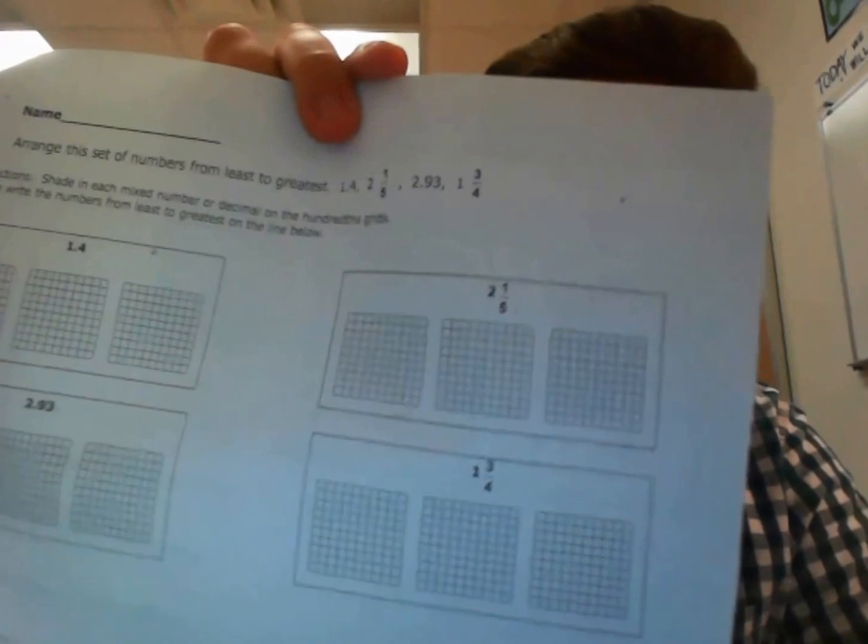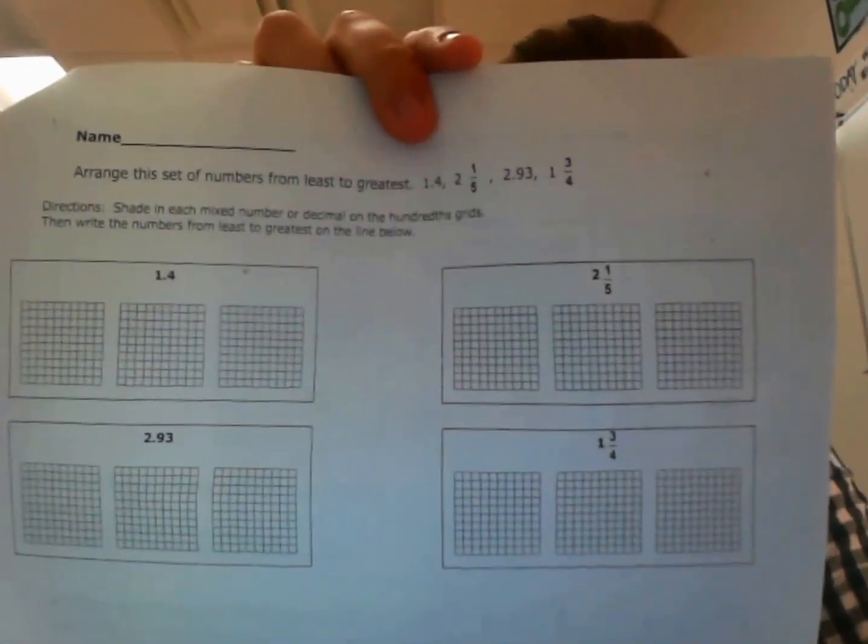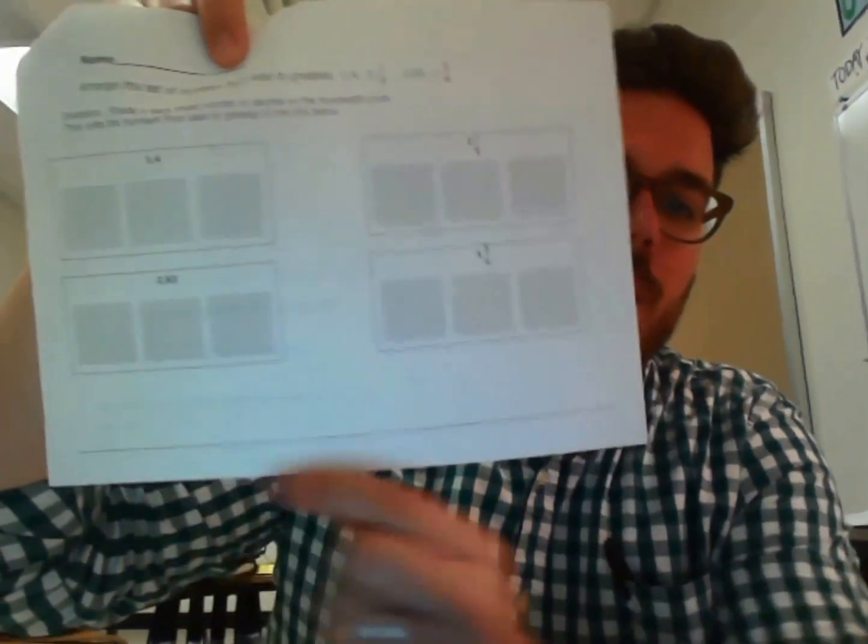The one that is from one to three — one and four tenths, two and one fifth, two and ninety-three hundredths, and one and three fourths — is a little different. You'll notice that these sets have three hundreds grids. So if you wanted to, there's a line at the bottom of the page — if you wanted to do from one to three you could do that and very much impress me and the rest of your teachers.